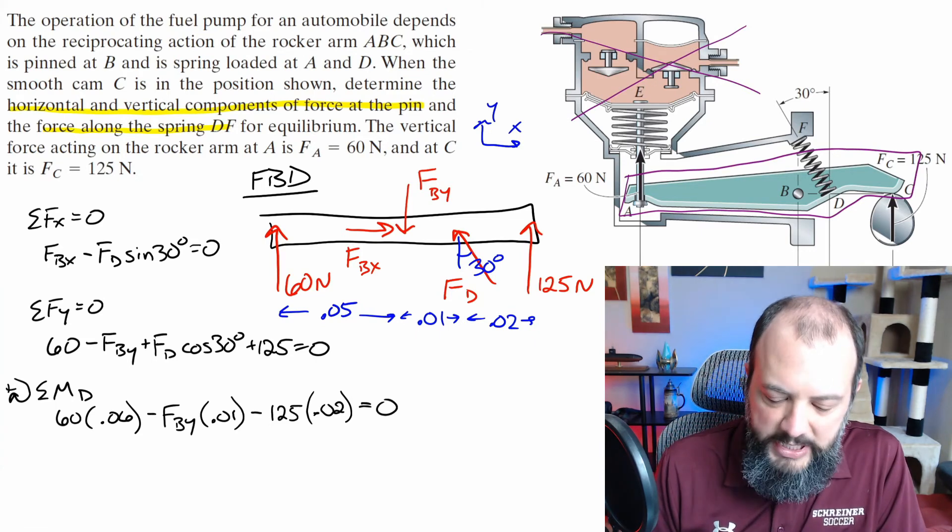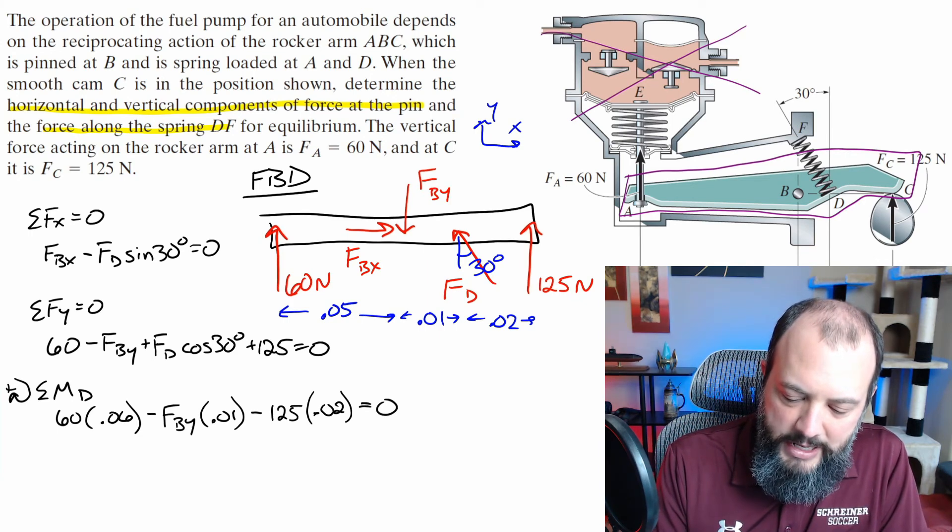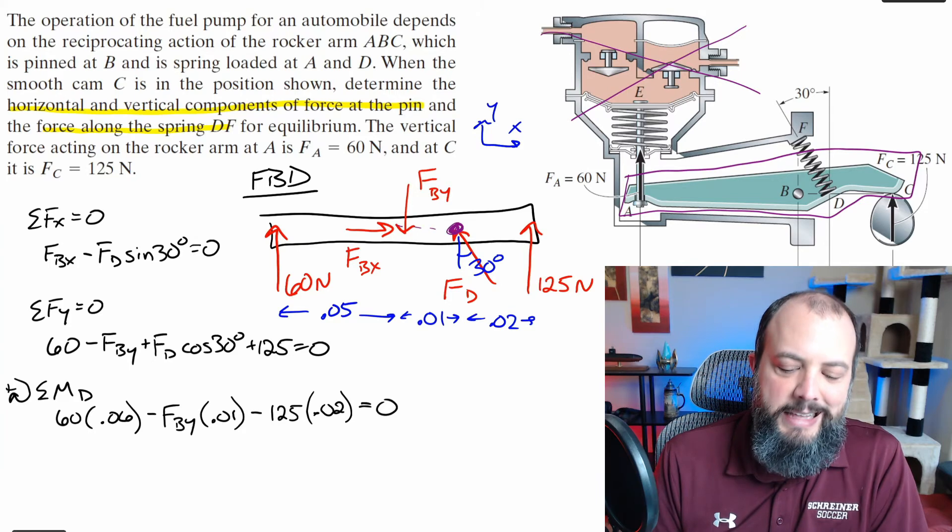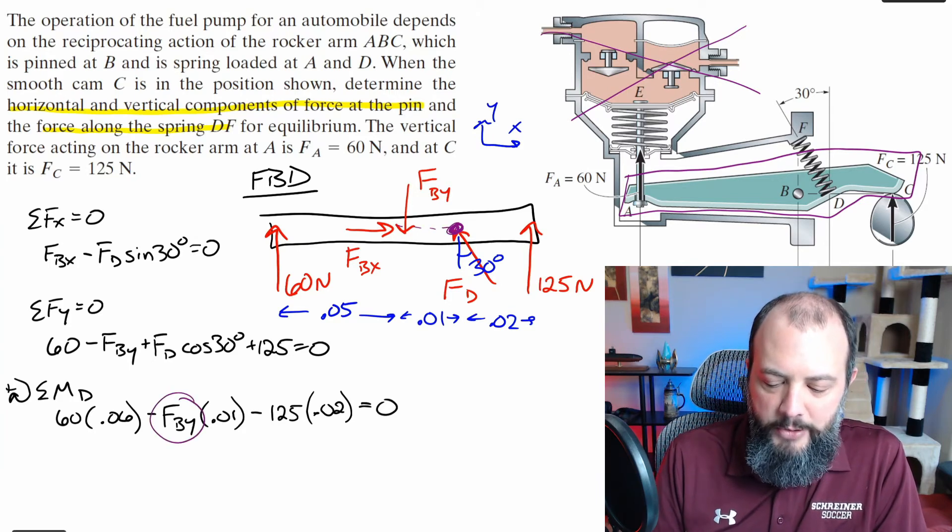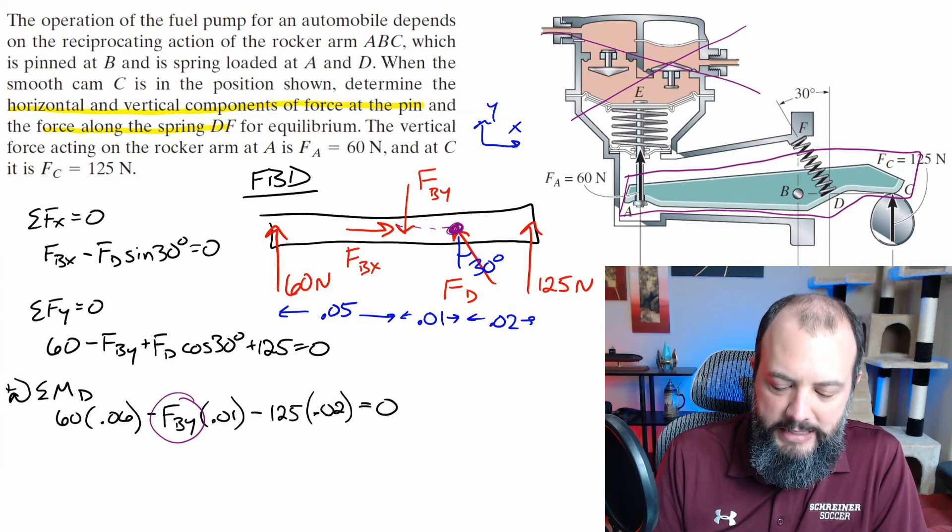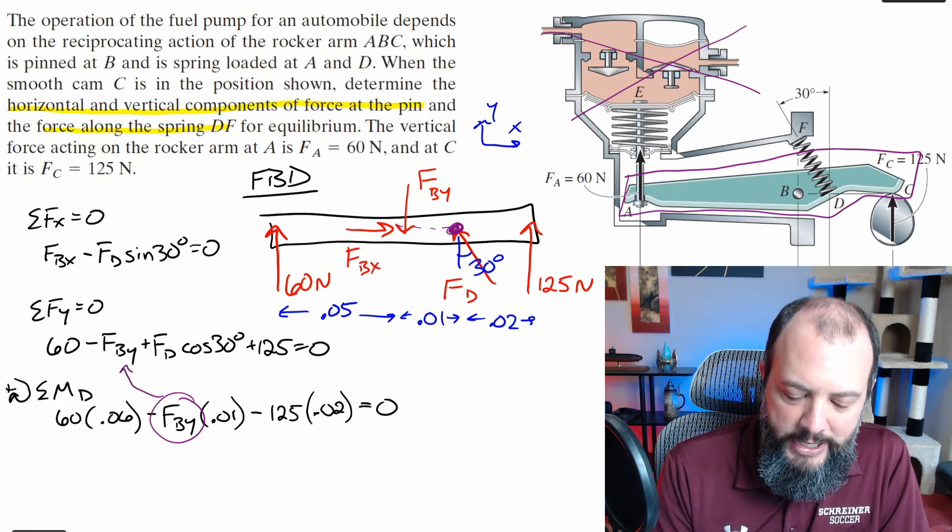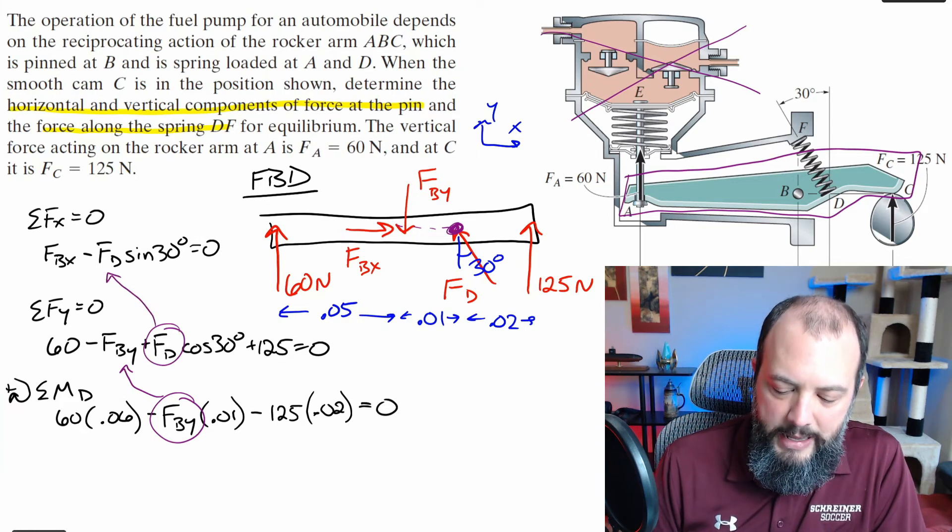So to actually finish this problem, to get to a final answer, you'll see for the moments I chose point D as my location, since FD gets canceled out, but also since FBX also points towards FD, that one will also cancel out as well. And I can solve for FBY in just one step. You could have also done a moment equation at point B and solved for FD in this step by itself. And either way, I'm going to plug this back into the Y direction equation, which would allow me to solve for FD. And I can plug that then into the X direction equation and solve for FBX.